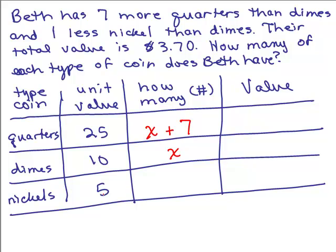All right, what about the nickels? How many nickels? She has one less nickel than dimes. Okay, so if she's got X dimes, one less, we're going to have to subtract one from how many dimes we have. Make sure you don't do one minus X. That will give you a negative number.